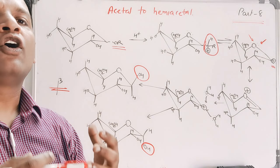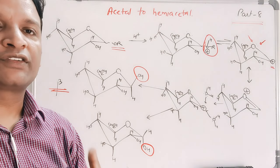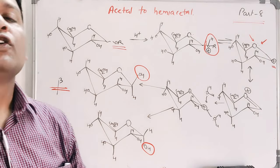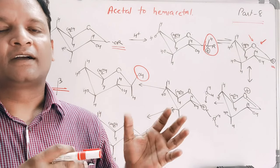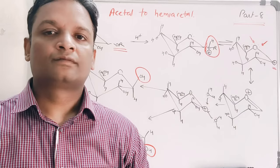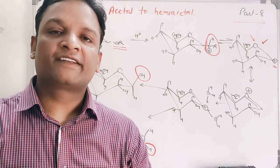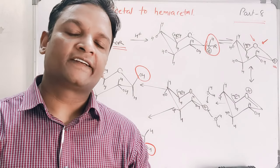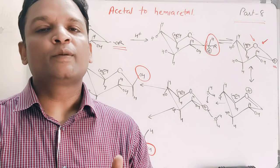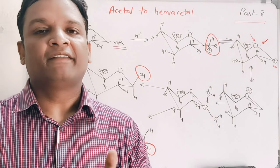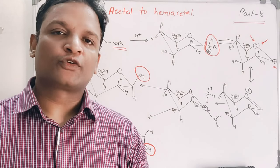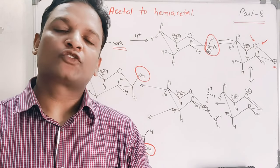Stabilization with the oxygen atom — therefore only anomeric groups are affected in this process. This is the complete process: hemiacetal to acetal and acetal to hemiacetal, both always catalyzed by acid. These two important points should be kept in mind clearly. With this, I'm sure these concepts are clear to all of you. Thank you.